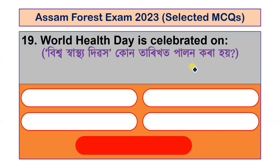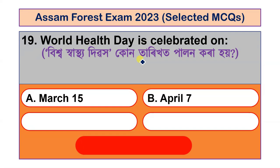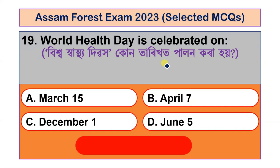Question number 19: World Health Day is celebrated on which date? Options are March 15, April 7, December 1 and June 5. The correct answer is option B, April 7. World Health Day is celebrated every year on the 7th of April.